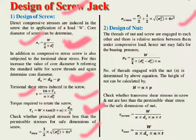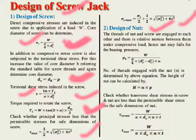Now for the design of the nut: the threads of the nut and screw are engaged with each other, and there is relative motion between them under compressive load. The nut may fail due to bearing pressure. The allowable bearing pressure pb is calculated by: pb = W / [(π/4)(d₀² − dc²) × n], where n is the number of threads engaged with the nut.